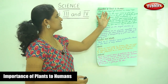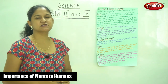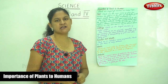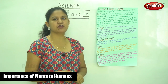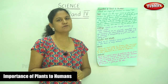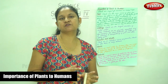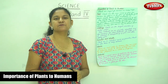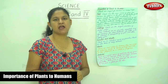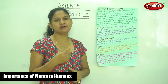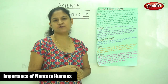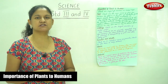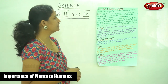Now we are going to talk about the importance of plants to humans. We have already seen that humans and animals survive because of plants. Plants not only provide us with food but also shelter and clothing — for example, birds build their nests on the top of trees. Let us see what the different importances of plants to humans are.